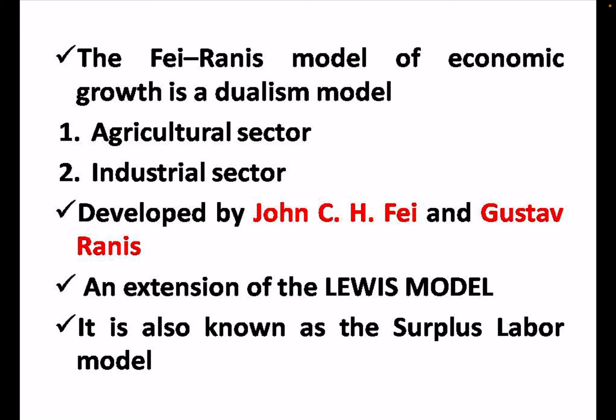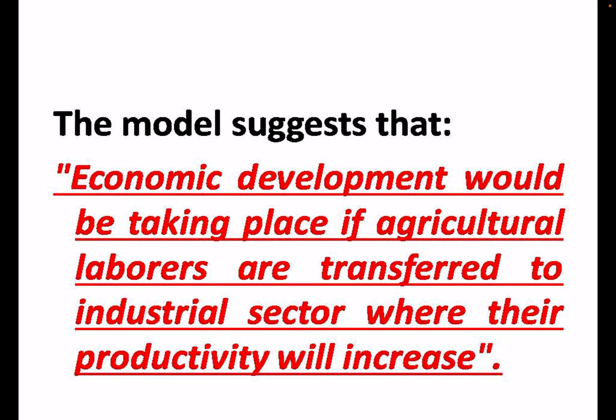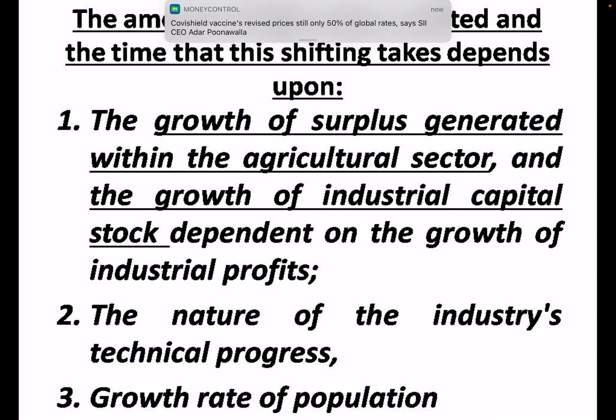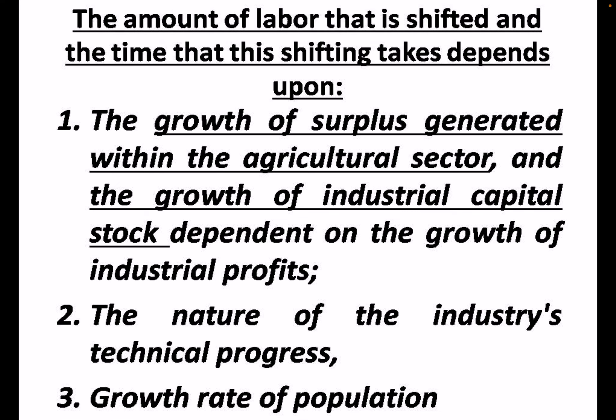The Fei-Ranis model is an extension of the Lewis surplus labour model. This model suggests that economic development occurs when surplus labour is transferred to the industrial sector, where productivity is more. The amount of labour shifting from agriculture to industry depends on: first, growth of the surplus generated within the agriculture sector and growth of industrial capital stock, which is dependent on the growth of industrial profit; second, the nature of the industry's technical progress.